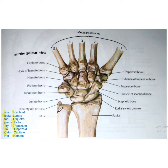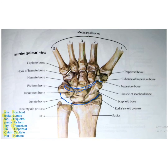Now let us discuss the general features of these carpal bones. The proximal row is convex proximally and concave distally, whereas the distal row is also convex proximally but, unlike the proximal row, the distal row is flat distally. Each carpal bone consists of six surfaces.